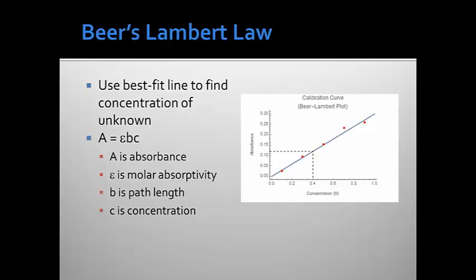So as long as we know the best fit line and we've kept all of our parameters constant, we can use Beer's-Lambert law to determine the concentration of the unknown, and that's what is frequently done in a variety of experiments using spectrophotometry.